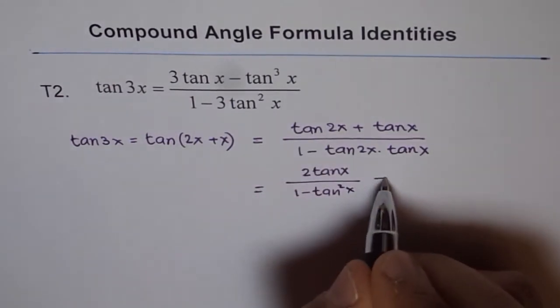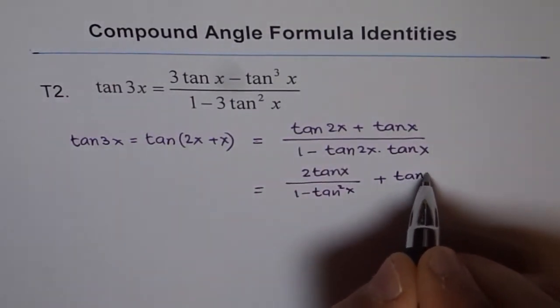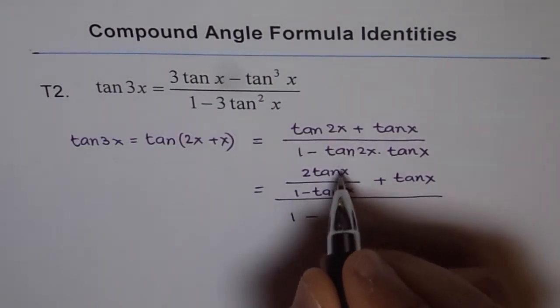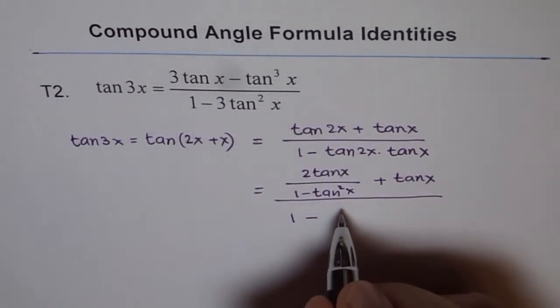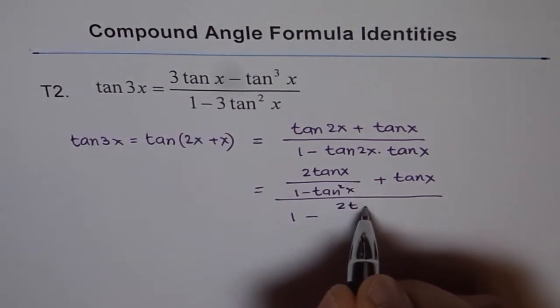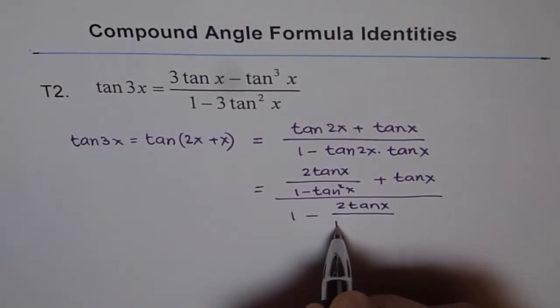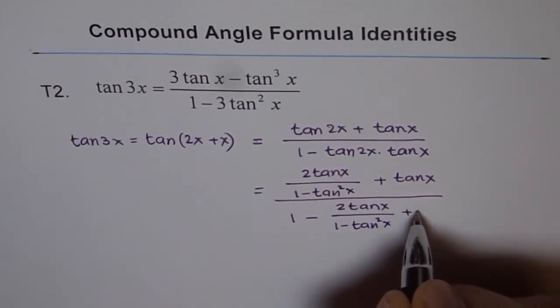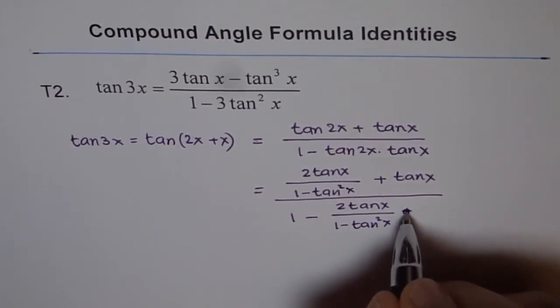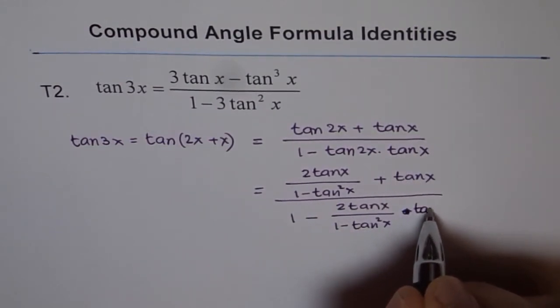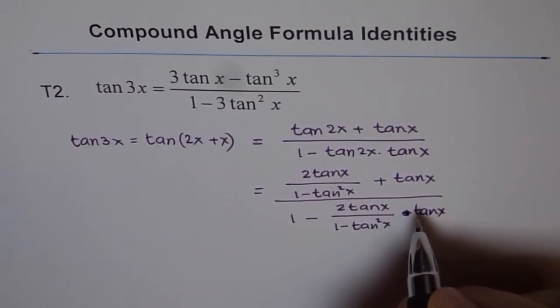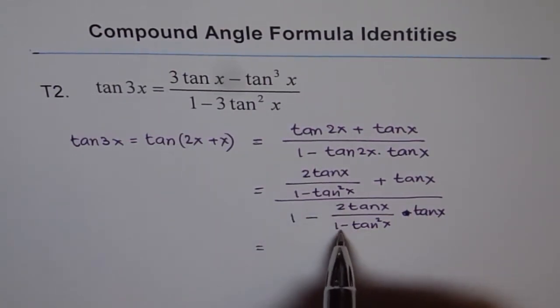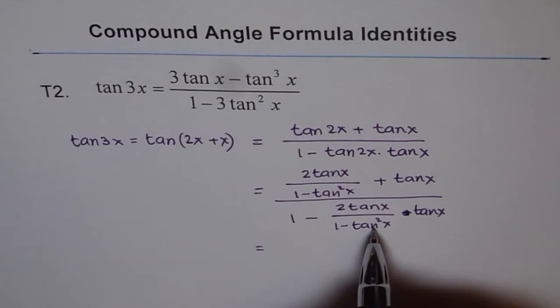So that is tan 2x plus tan x over 1 minus, we have the same thing for tan 2x which is 2 tan x over 1 minus tan squared x times tan x. That's the denominator. Now we'll take the common denominator and 1 minus tan squared x will cancel out.